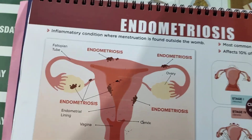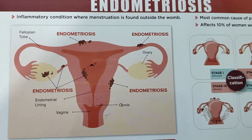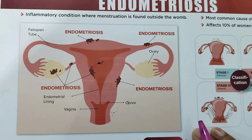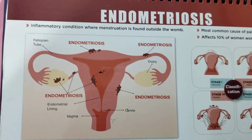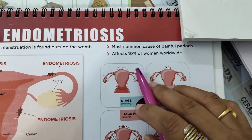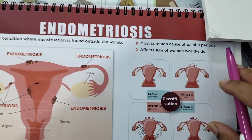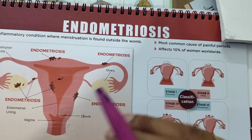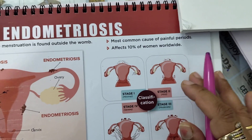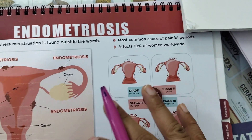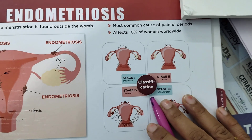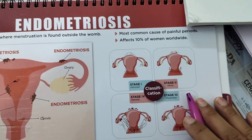There are various theories about why it happens, but the exact cause is still not very clear. What is very clear are the symptoms and the treatment. Endometriosis is one of the most common causes of painful periods, and almost ten percent of women worldwide are already affected by it.